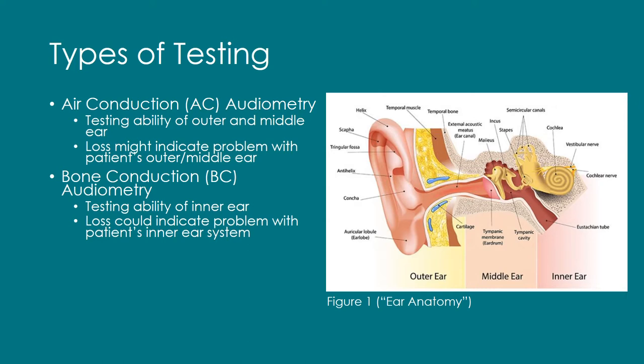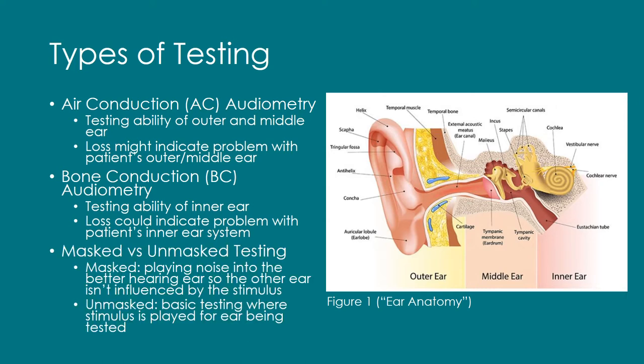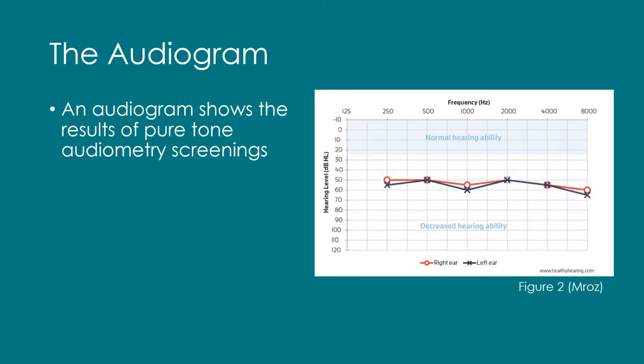You can see the sections of the ear in Figure 1. Mask testing involves playing noise into the better hearing ear, so the other ear being tested isn't influenced by the stimulus. Unmask testing is basic testing where the stimulus is played into an ear to test the hearing of that ear. An audiogram shows the results of pure tone audiometry, and an example can be seen on the right side of the screen in Figure 2.